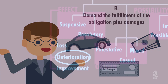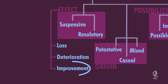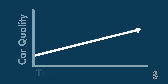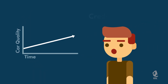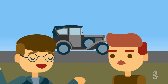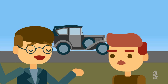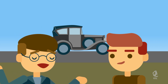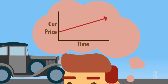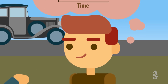How about if instead of deterioration, there is improvement of the thing? If the improvement is by nature or by time, then the improvement shall inure to the benefit of the creditor. For instance, the car promised by Antin to be delivered to Henry upon fulfillment of the condition is a vintage car, the value of which increases over time. Such increase in the value of the car shall inure to the benefit of Henry should the condition be fulfilled.